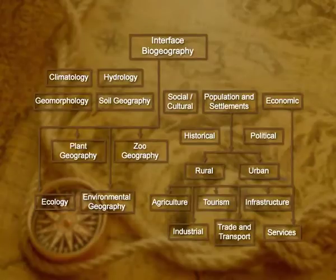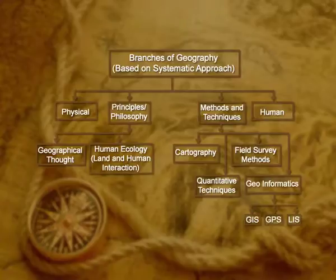We studied the link between human geography and the modern discipline of geography. We have also studied the various branches of geography based on the systematic approach. Here you see the various branches that sprout from the body of geography — this table is given in the class 11 geography textbook. In the following lectures, we will study the sub-branches highlighted in that table.